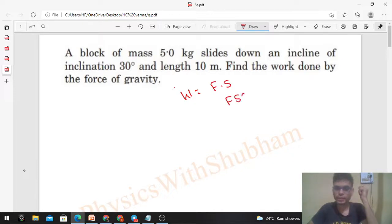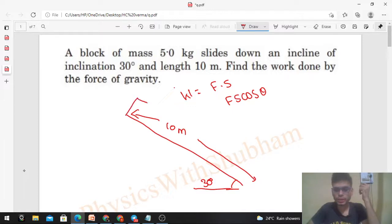So we have an incline surface with inclination angle 30 degrees and the length of the inclination is 10 meters. So if we talk about the block, initially it was at the top and finally it slides down, moving 10 meters downward along the incline.